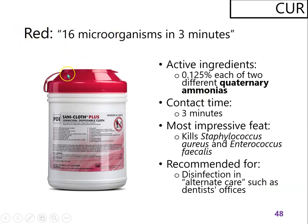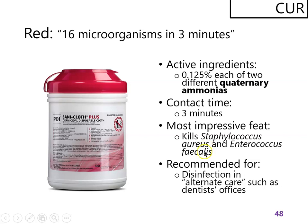Red Sanicloth Plus claims to kill 16 microorganisms in three minutes — there's your contact time. The active ingredients are a mix of quaternary ammonias. It can kill Staphylococcus aureus, which is somewhat hard to kill. Notice it doesn't mention endospores, Mycobacterium tuberculosis, norovirus, or other naked viruses. So this would not be used where you'd expect many dangerous pathogens, but a dental office, for example, would be a good place to use it.